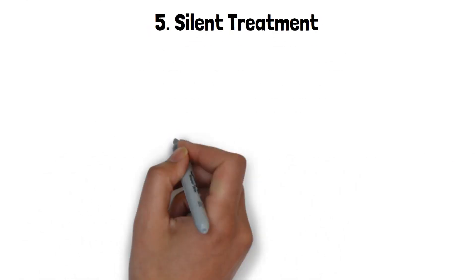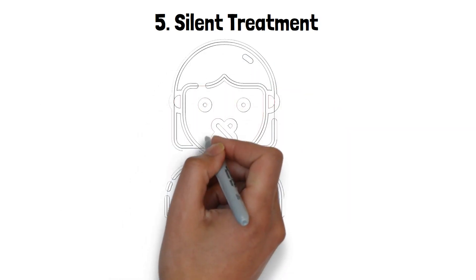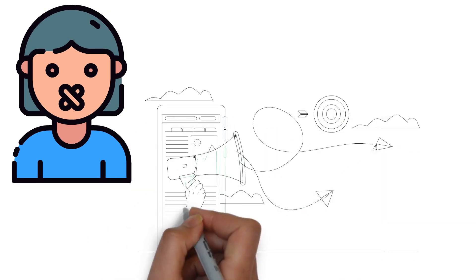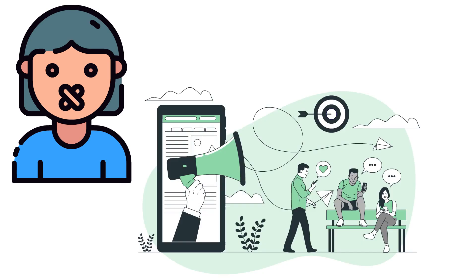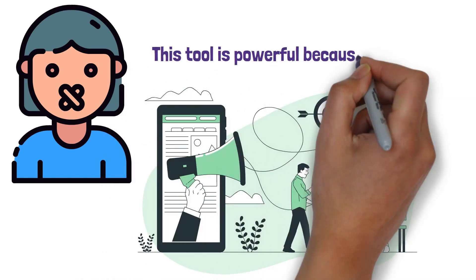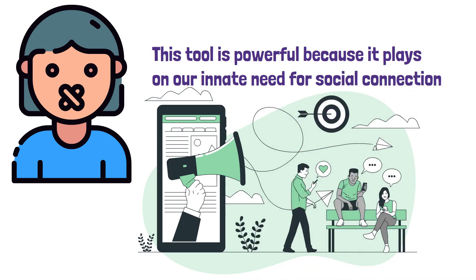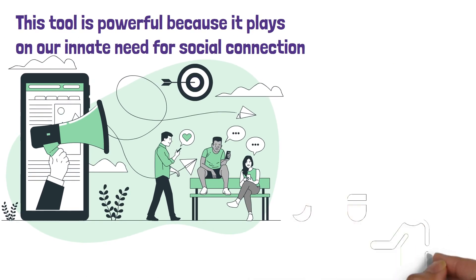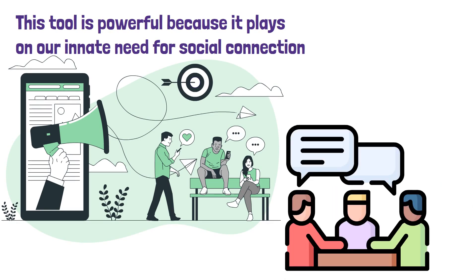5. Silent treatment. Ah, the deafening sound of silence. You disagreed or refused to comply, and now they've gone radio silent. By withholding communication, they exert control, making you anxious and desperate to reconcile. This tool is powerful because it plays on our innate need for social connection. It forces you into a position where you're likely to concede just to break the silence. Remember, communication is the cornerstone of any relationship. Using silence as a weapon is a big red flag.